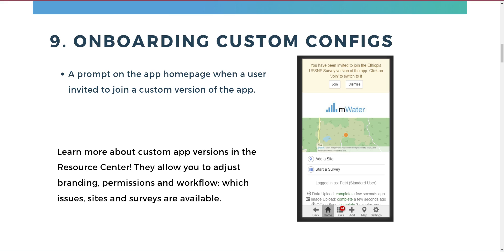You can choose which properties and in which order to show them, as well as have custom issues — meaning tickets in the app — for example if a water pipe bursts or a water point breaks down. With the new feature, it's also much easier to make sure your enumerators see when they've been invited to a custom config and get onboarded properly. To learn more, check the resource center or contact us at info@mwater.co.